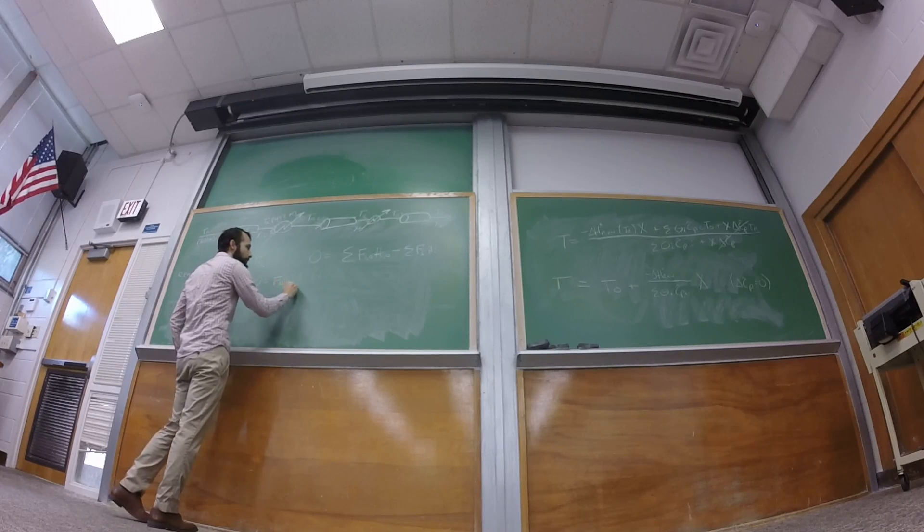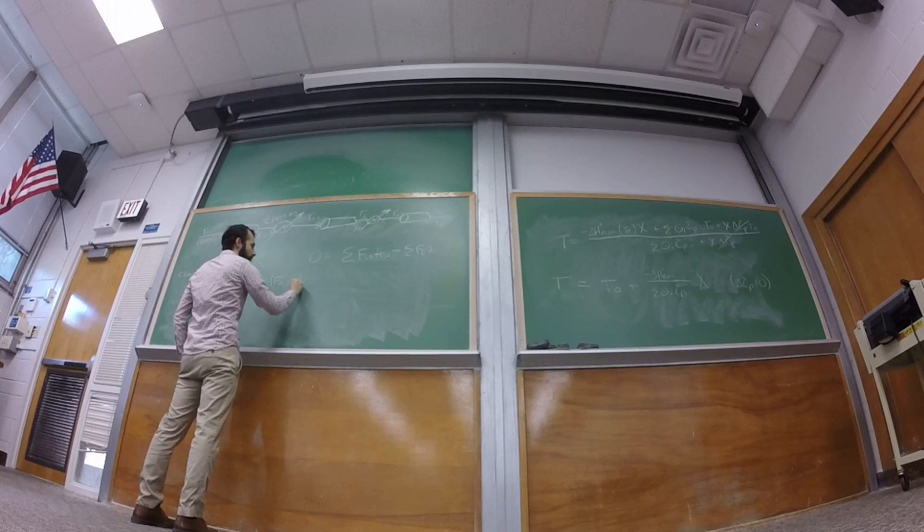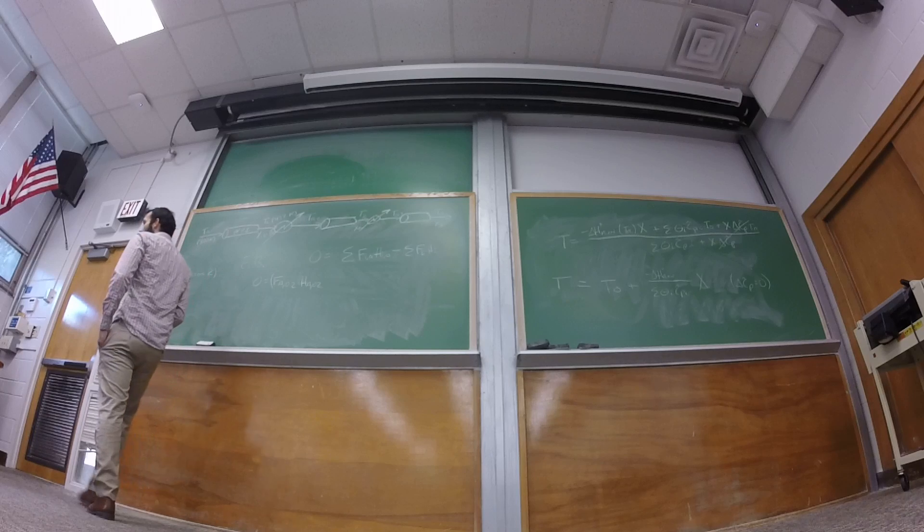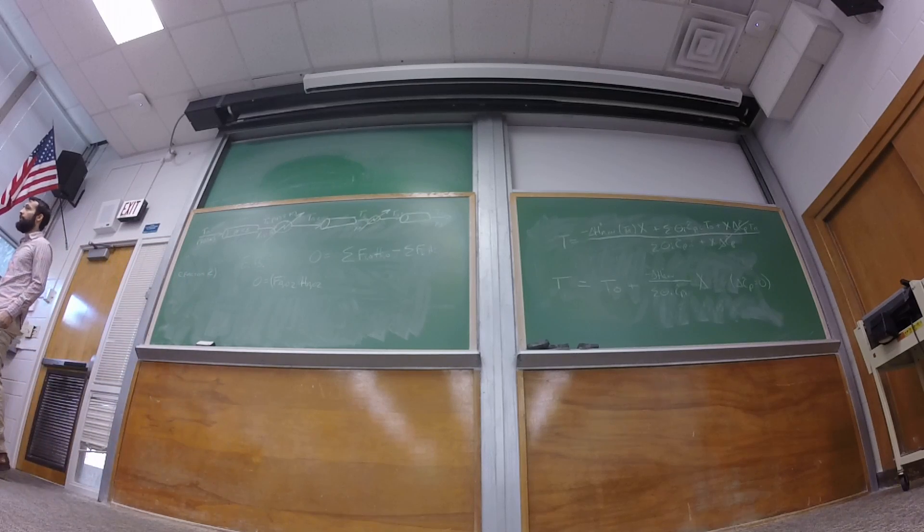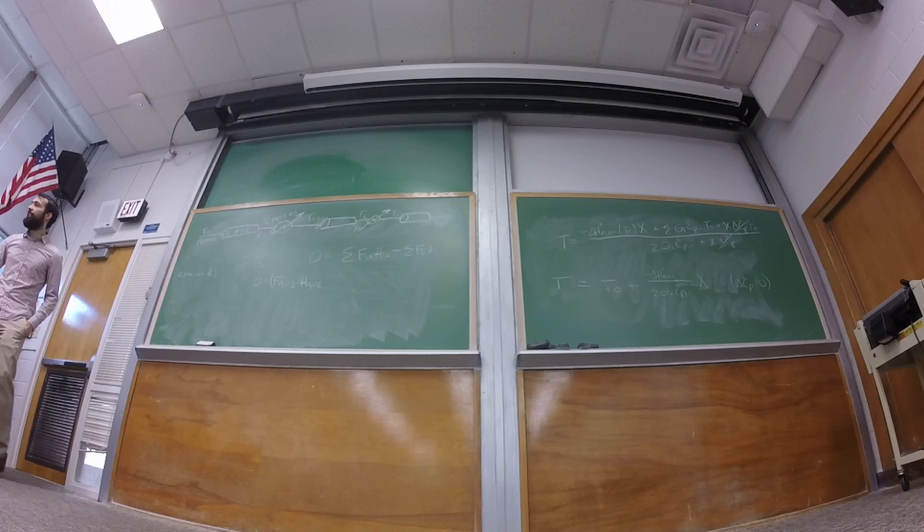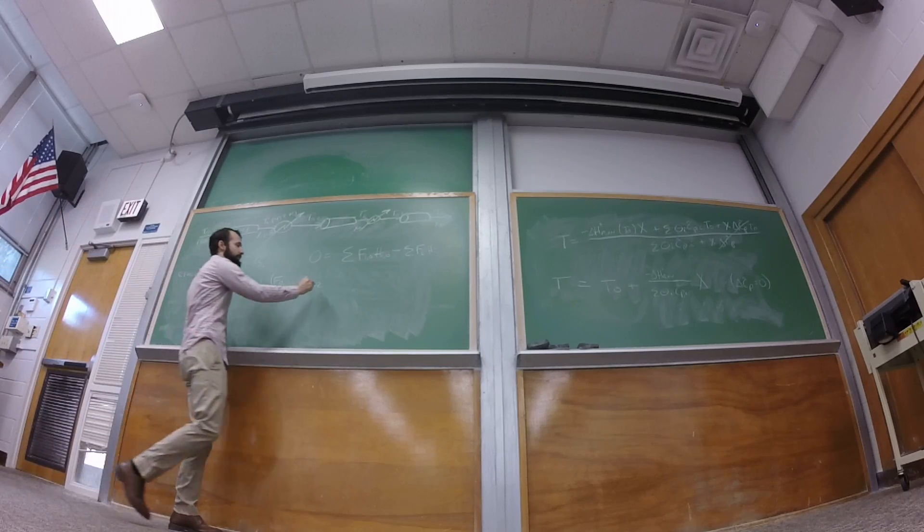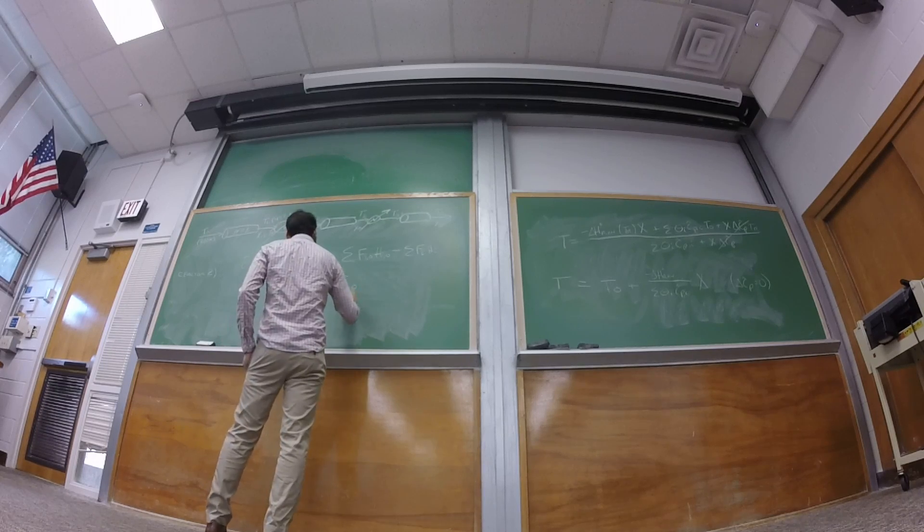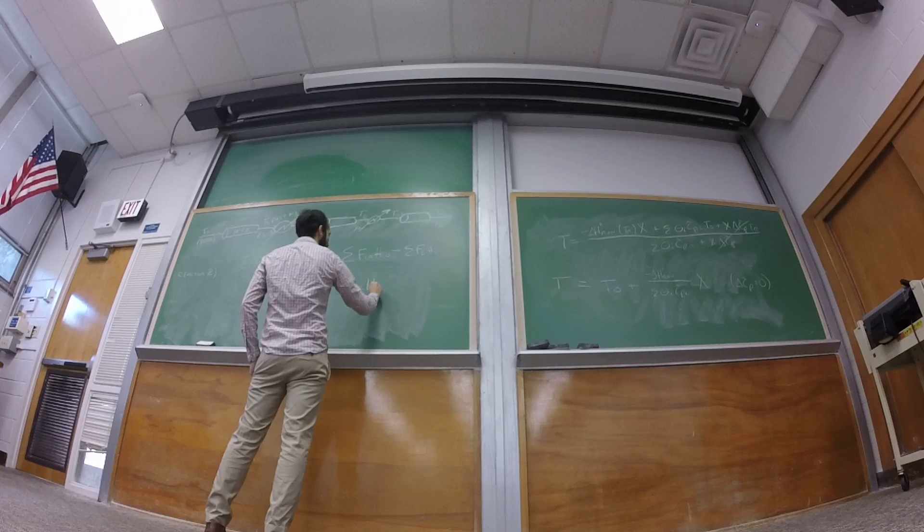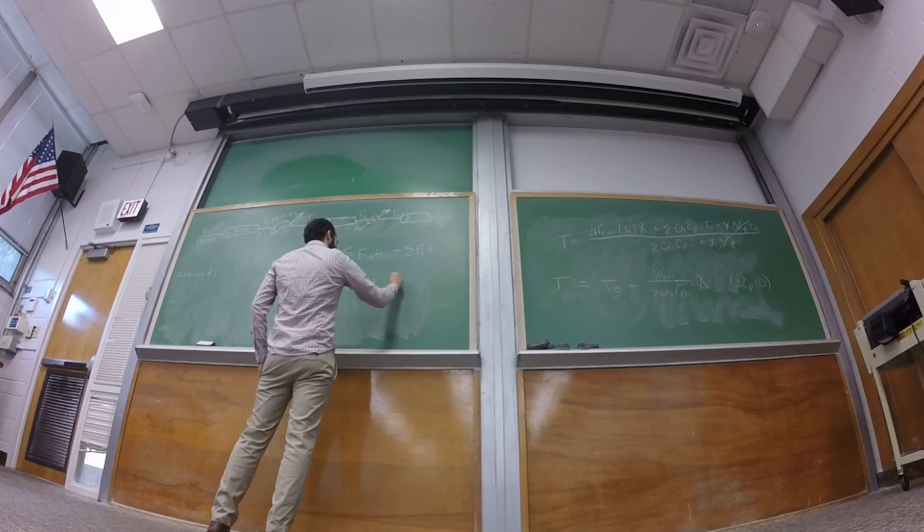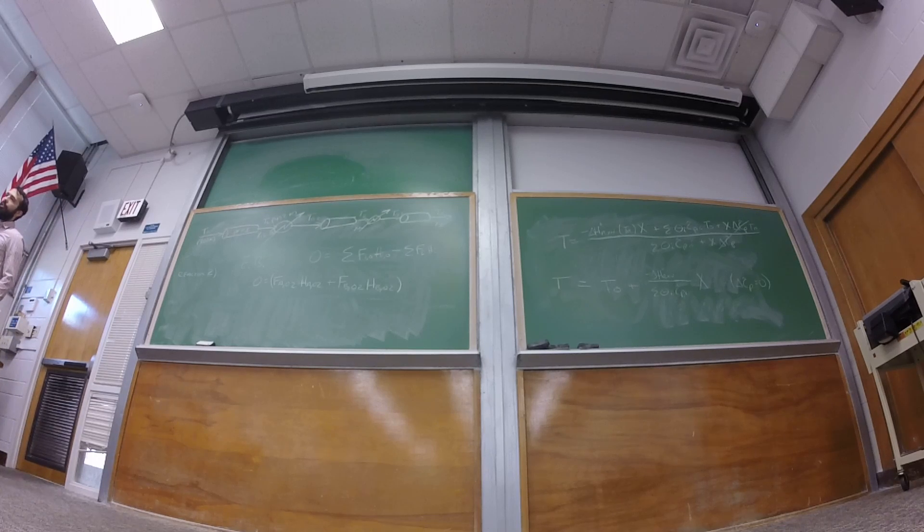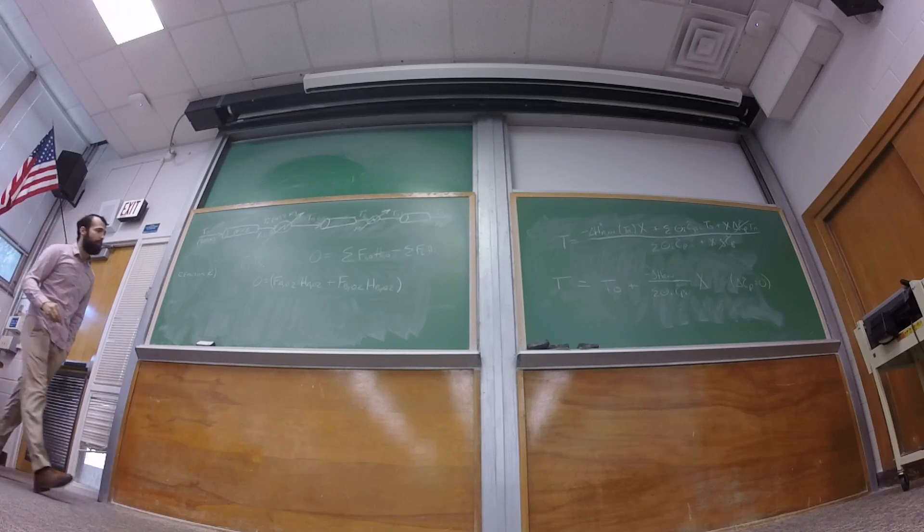Using the nomenclature that we have, this is FA02 times the enthalpy of A02 plus what? FB. We can't forget that now, so this is kind of what someone was suggesting, that we try to put everything in the thetas, but I think that can be confusing. We have to keep in mind now that it's not going to be pure A coming into this second reactor anymore. And then we subtract off.